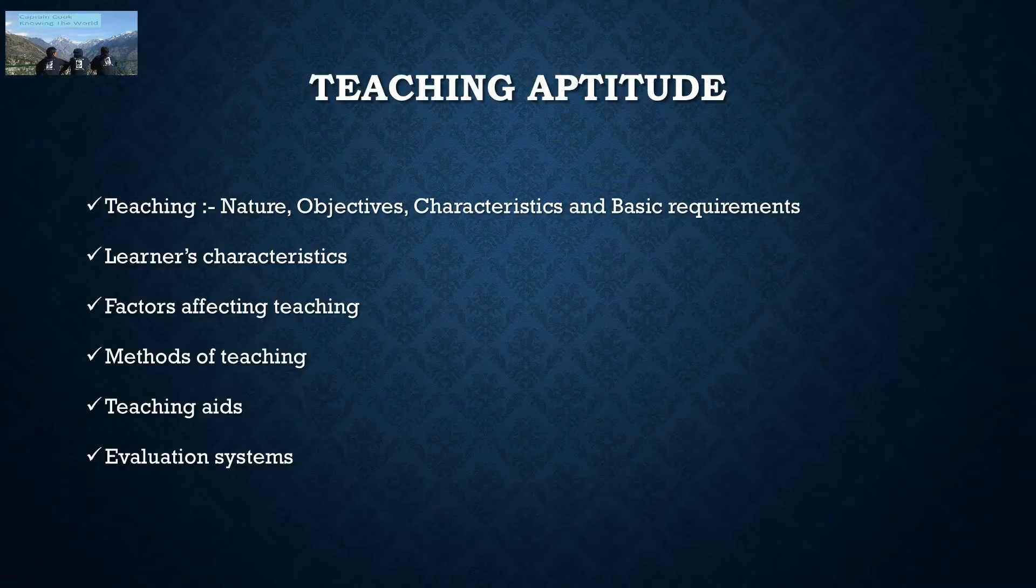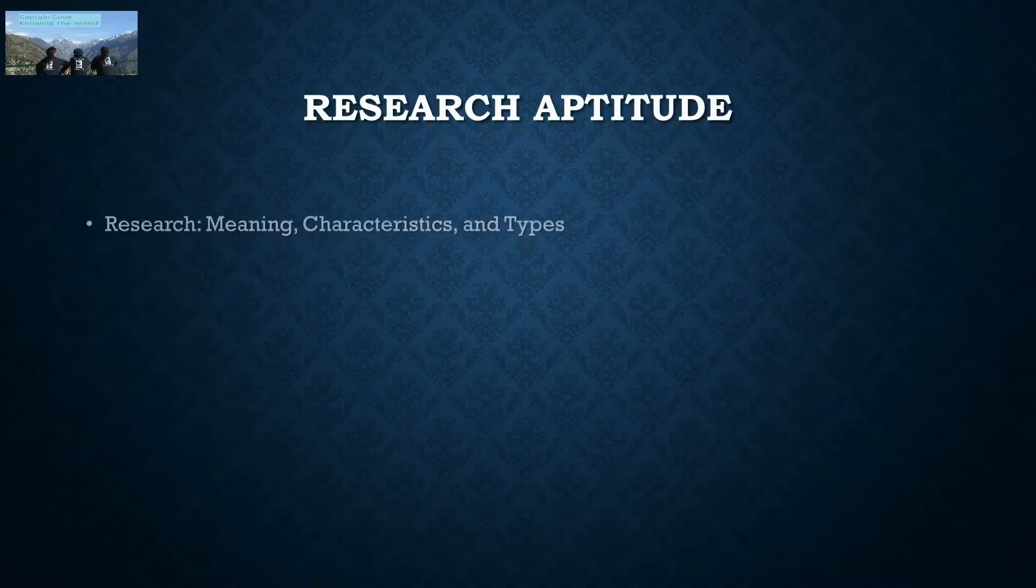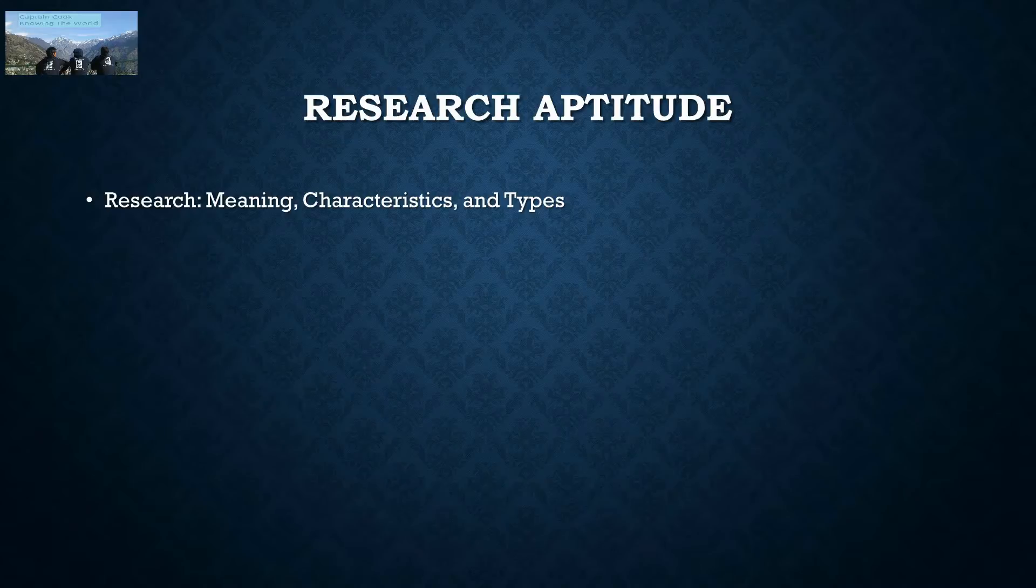Research aptitude: An assistant professor or JRF should have the ability to research. It means he or she should know the meaning, characteristics, and types of research along with the steps to be taken in research like collection of data, analysis, and submission of data using particular models or techniques.